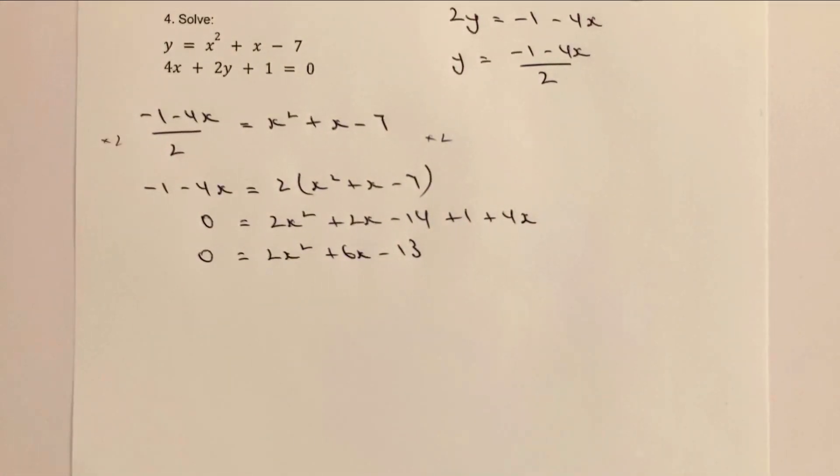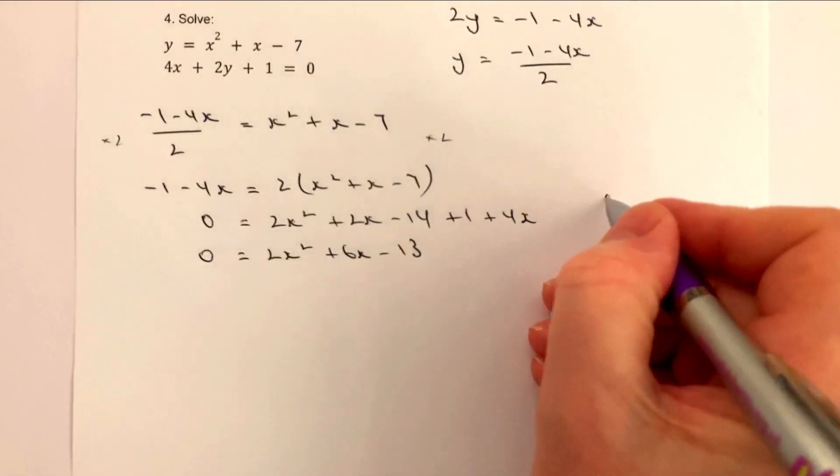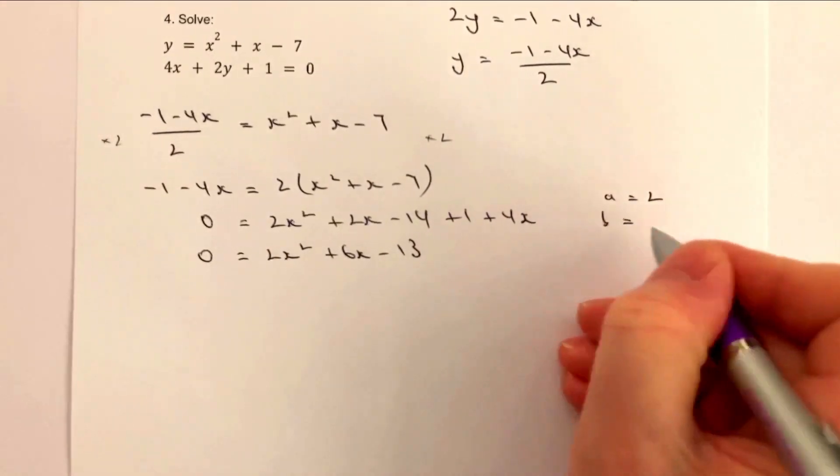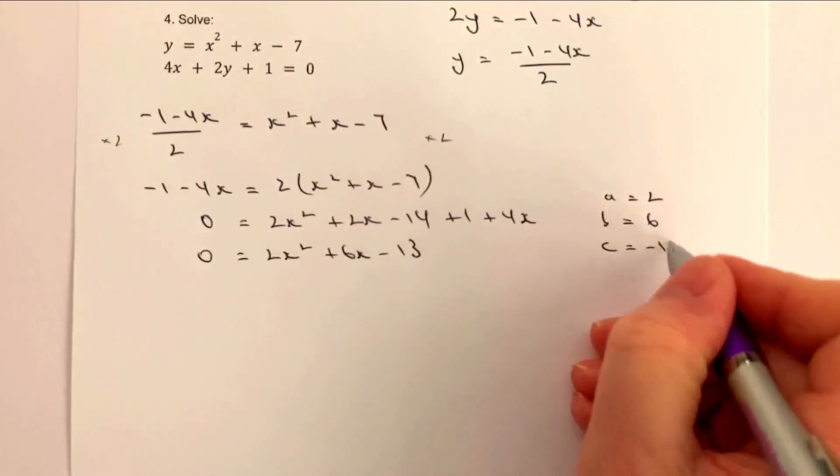Now once again I know that's not going to factorize easily, so therefore I'm going to use the quadratic formula. To do that I'm going to say that a equals 2, b equals 6, and c equals minus 13.